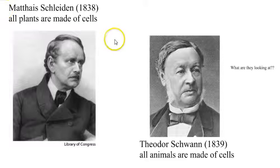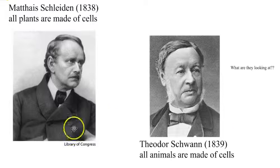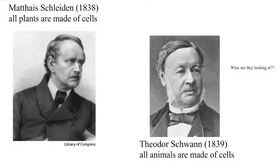Even though it seems obvious to us today, it wasn't that obvious back then. The following year, Theodor Schwann published a paper stating that all animals were made of cells. I always imagined these two guys knew each other and were rivals — Schleiden publishes saying all plants are made of cells, then Schwann comes out a year later saying all animals are made of cells too.